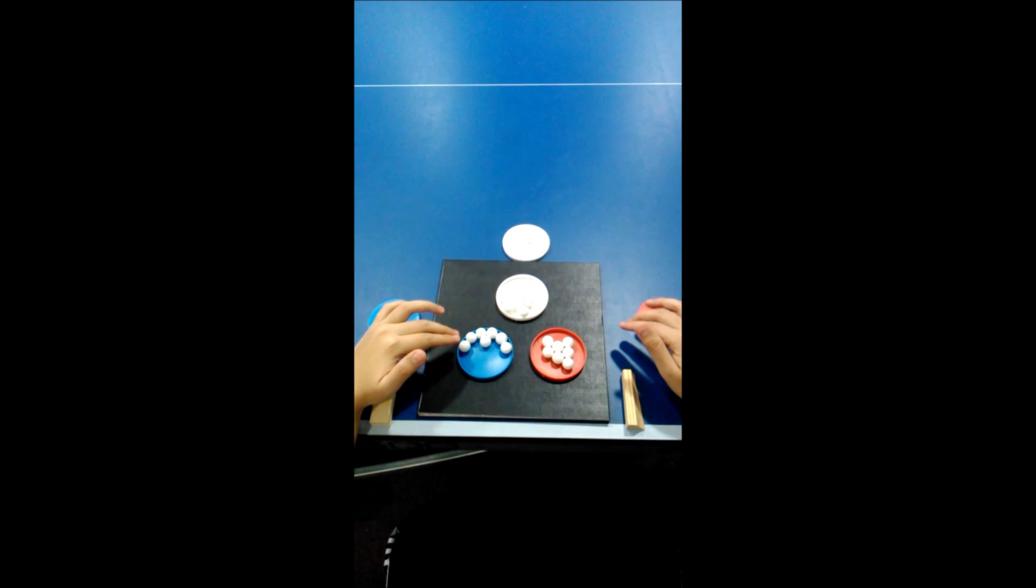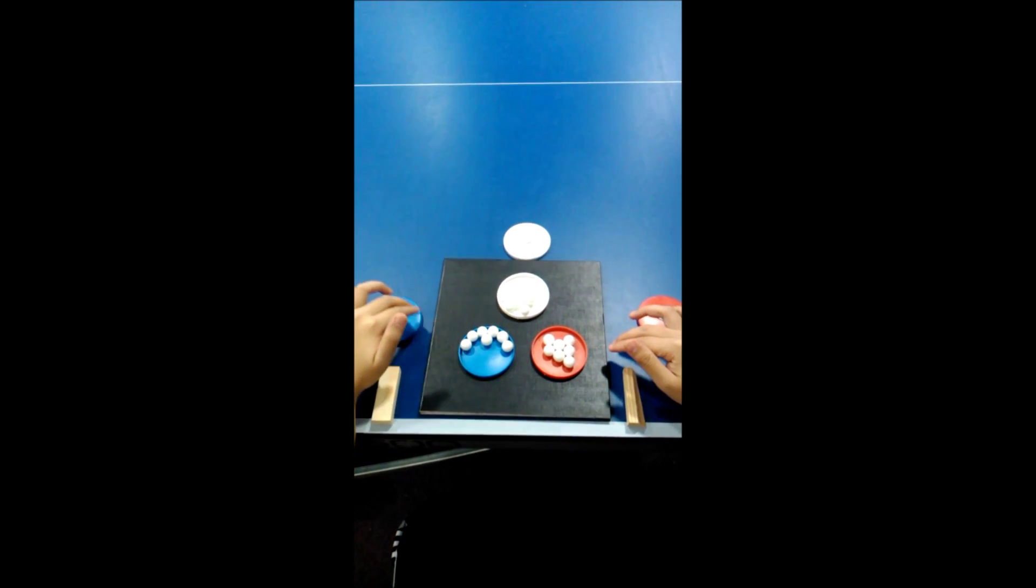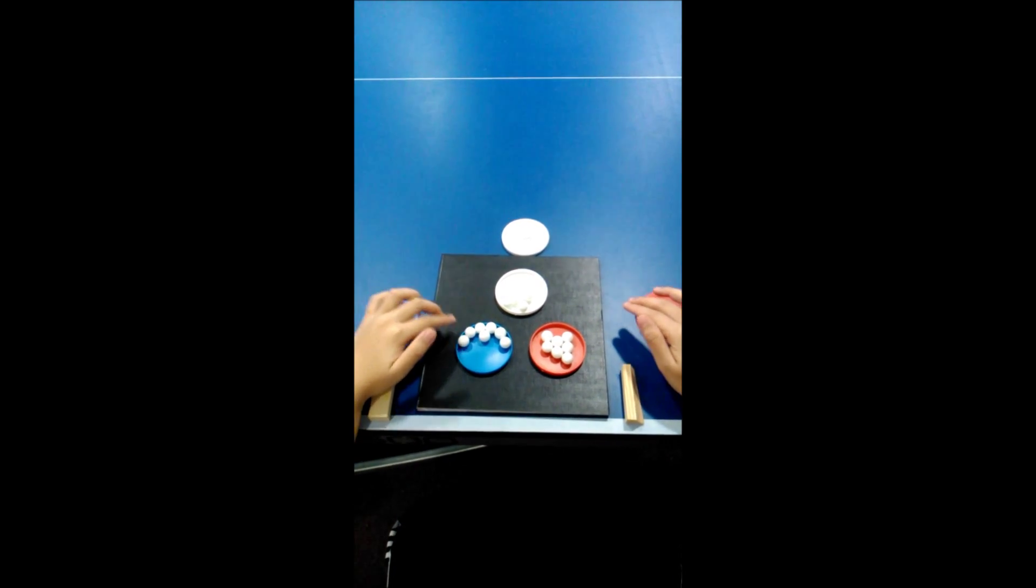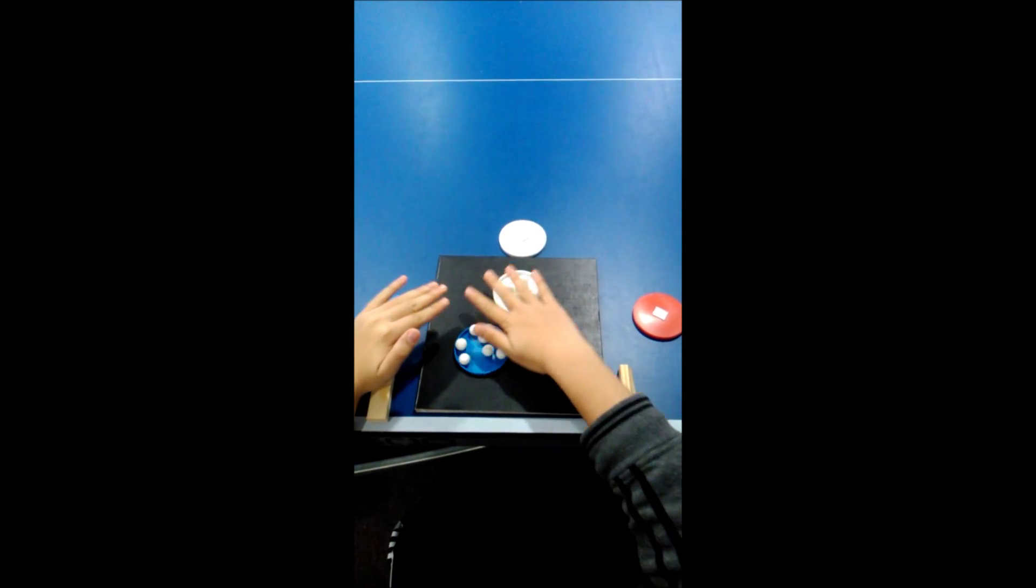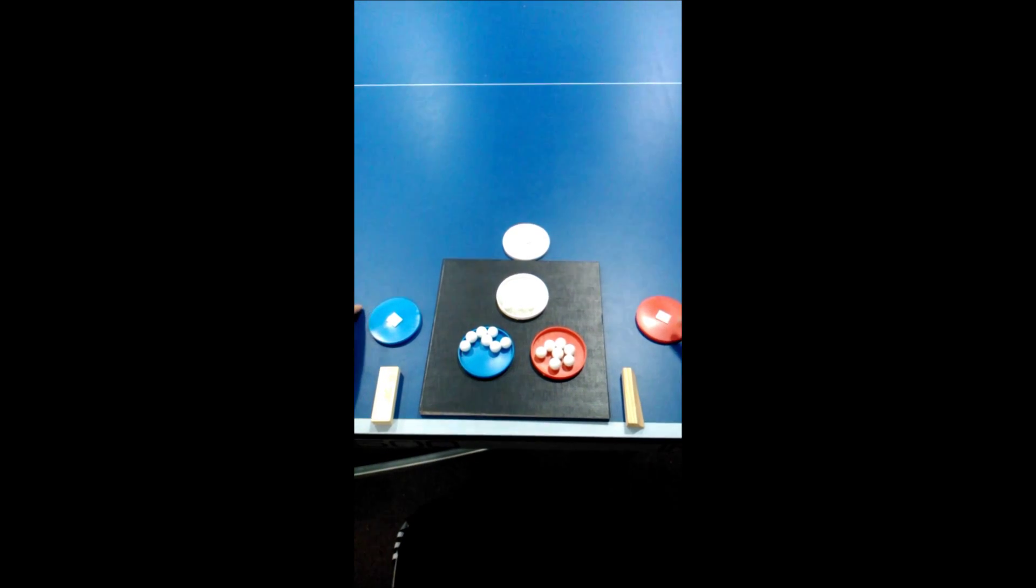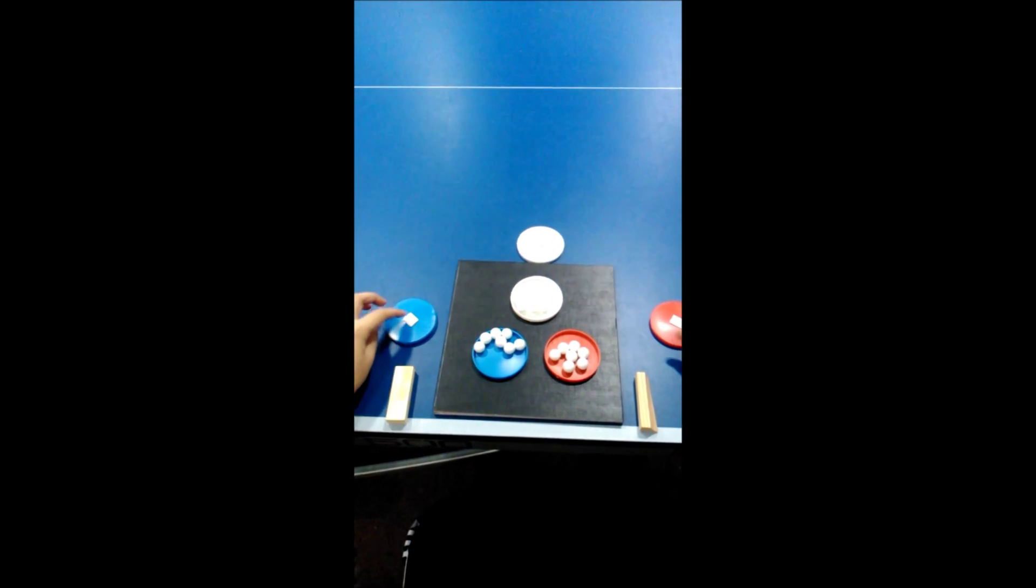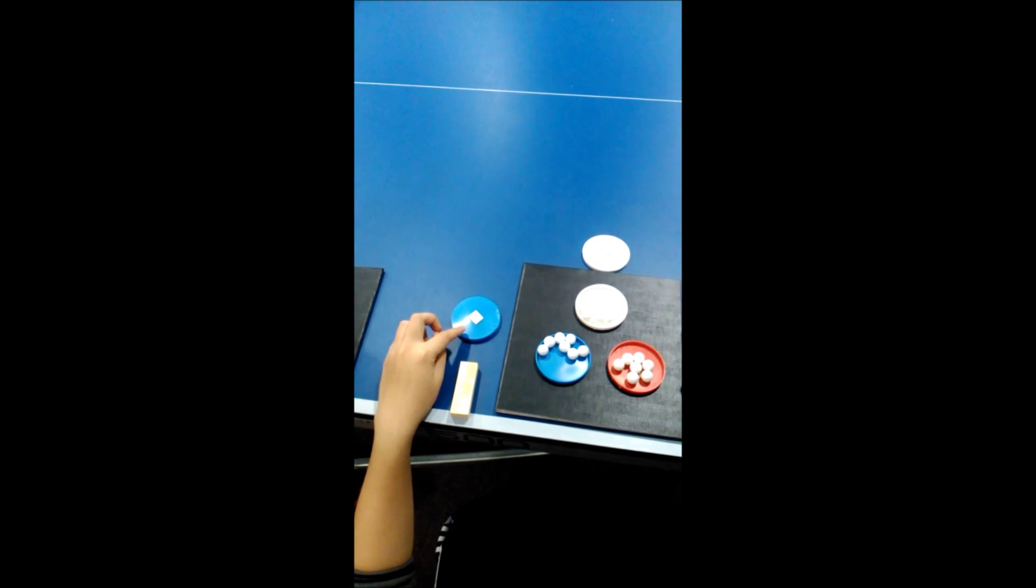The combination of this material has the same behavior with the real base isolation system. This marble can move horizontally like this, and then we use double-sided tape to install the base isolation system with the building.